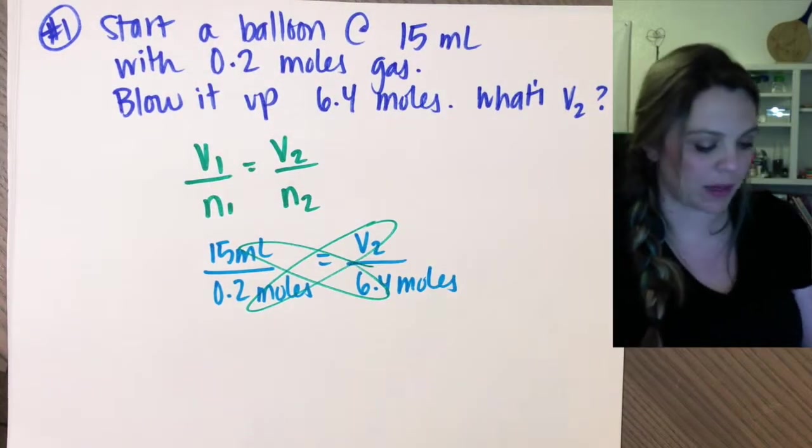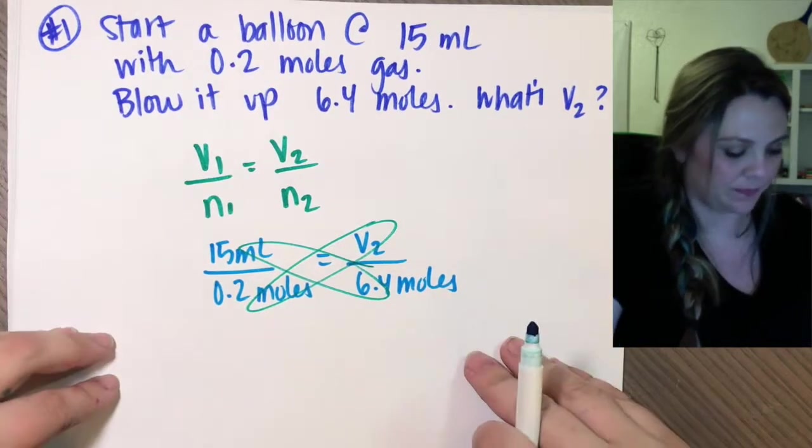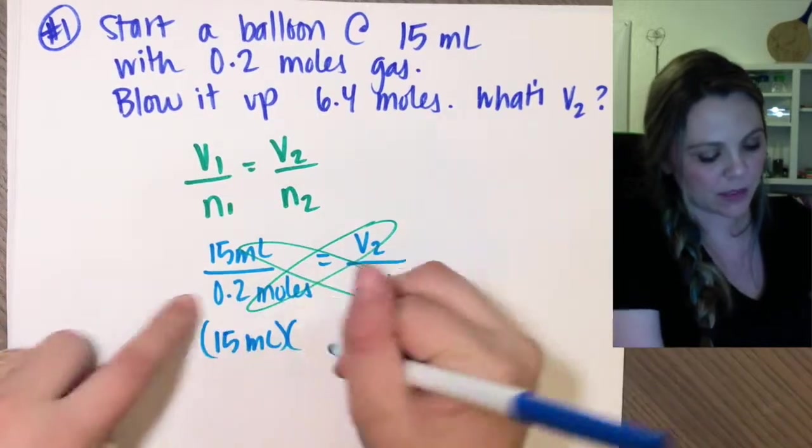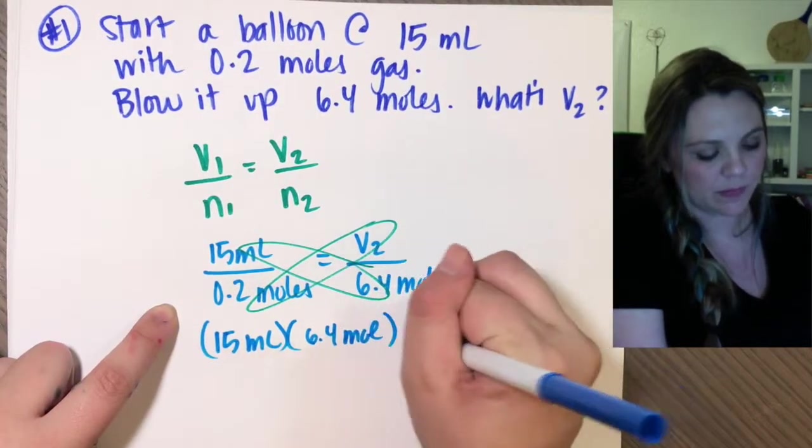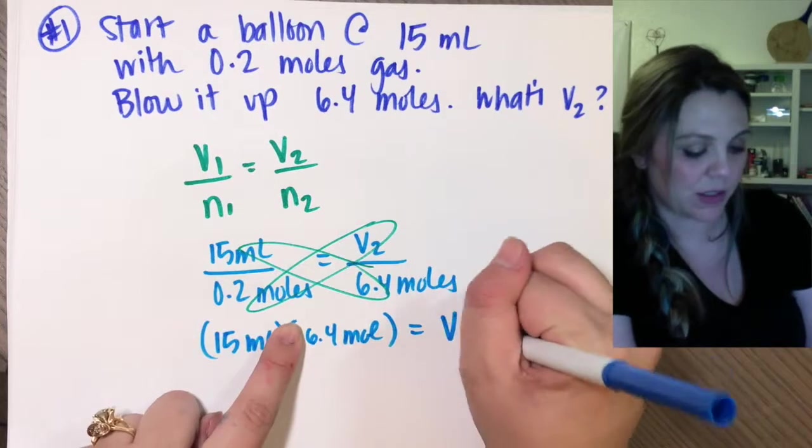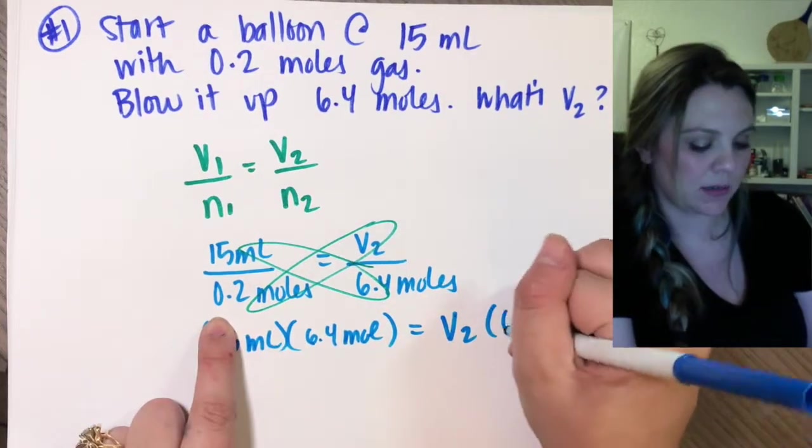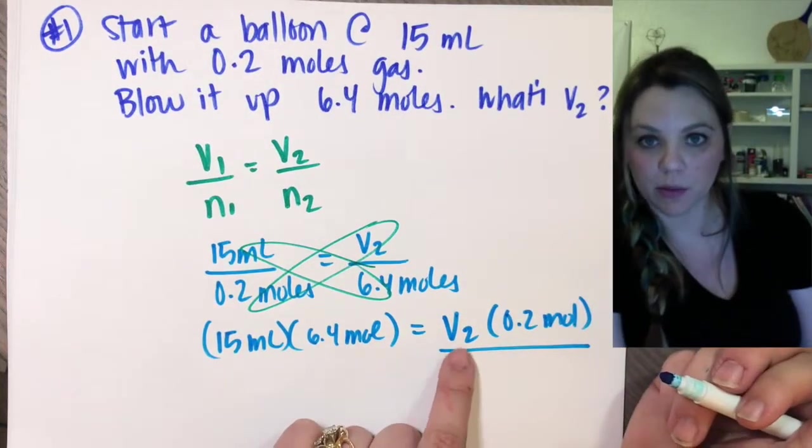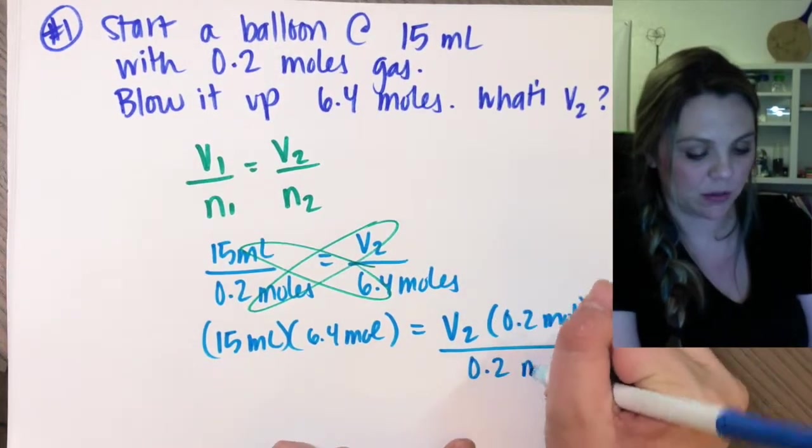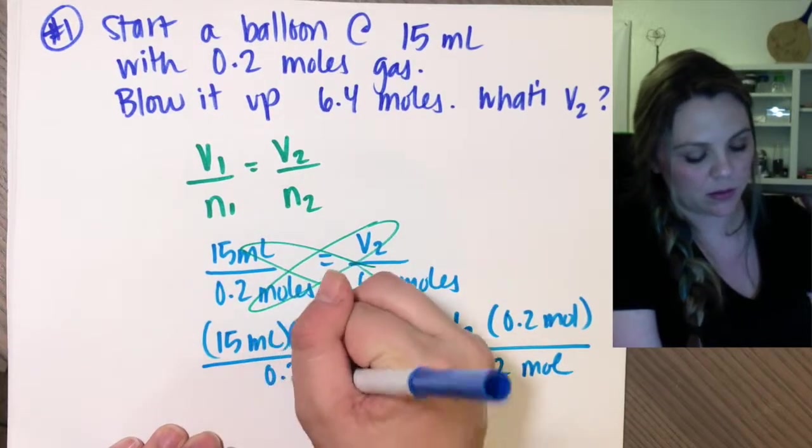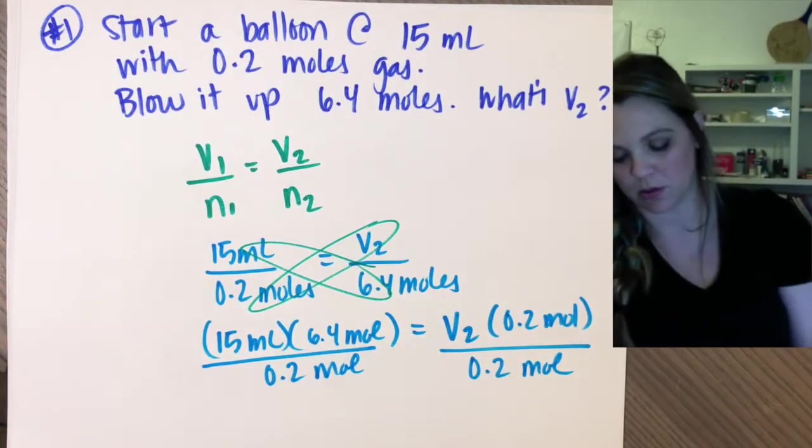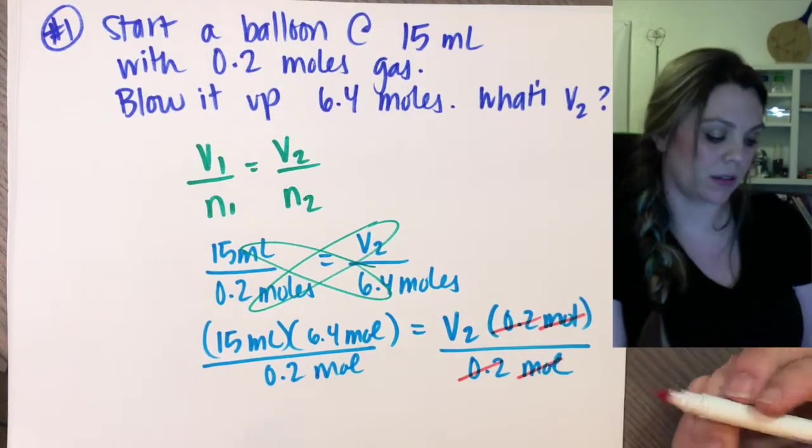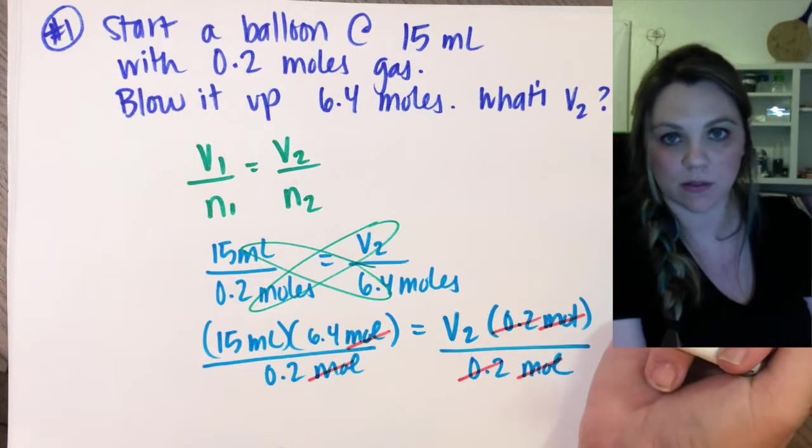Same thing, butterfly method. You would get, 15 mils times 6.4 moles equals V2 times 0.2 moles. I want to isolate my variable. I'm solving for V2. So divide by 0.2, divide by 0.2. And moles will cancel out here. Mole and mole cancels on my left-hand side.